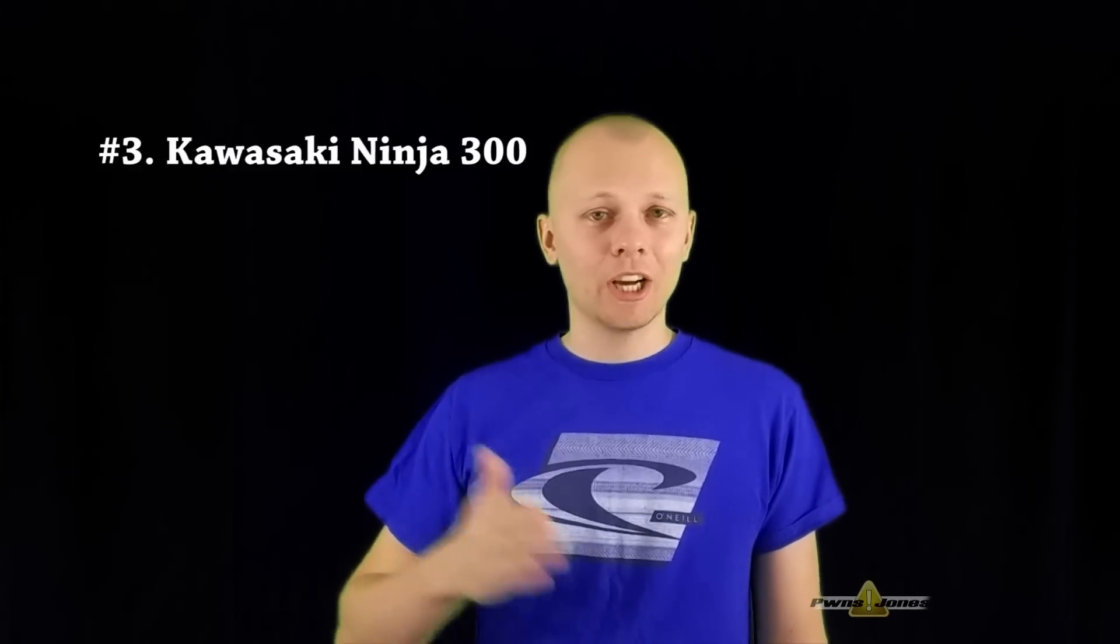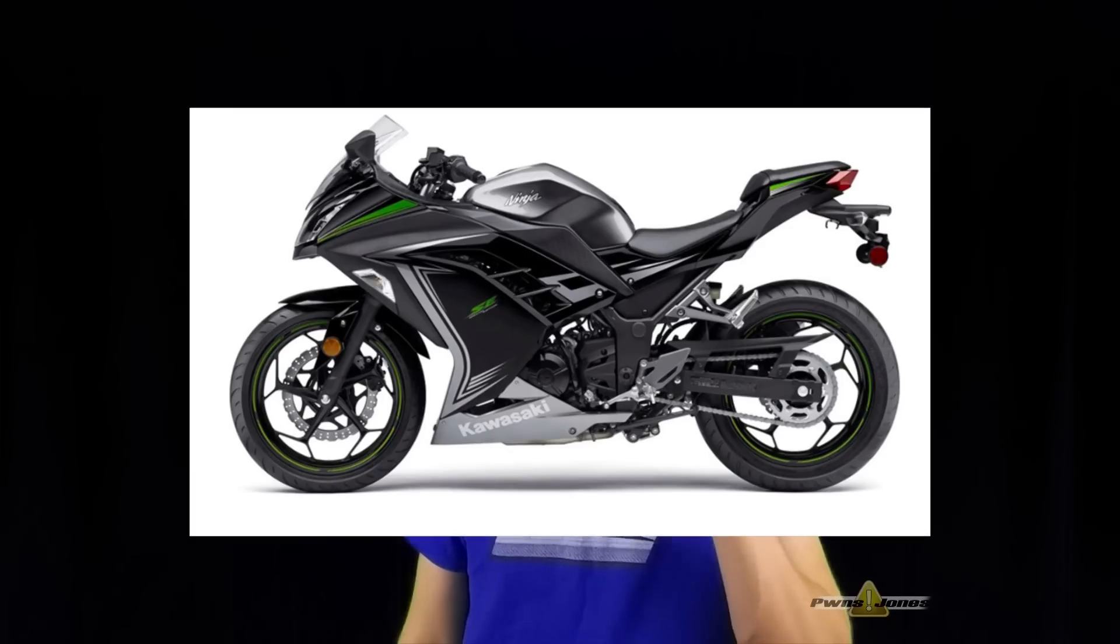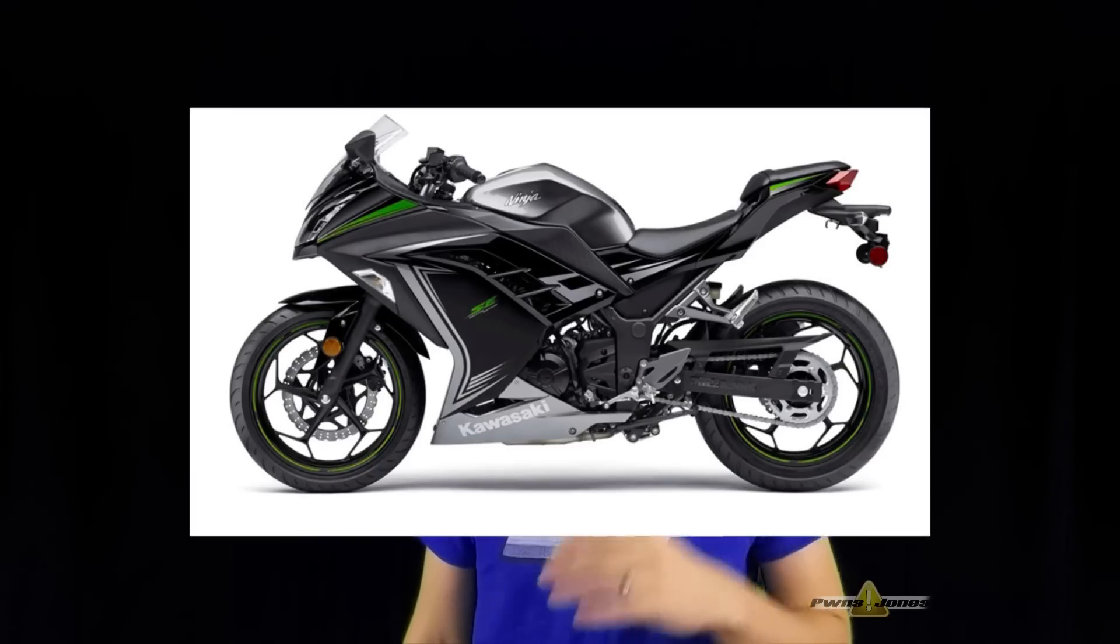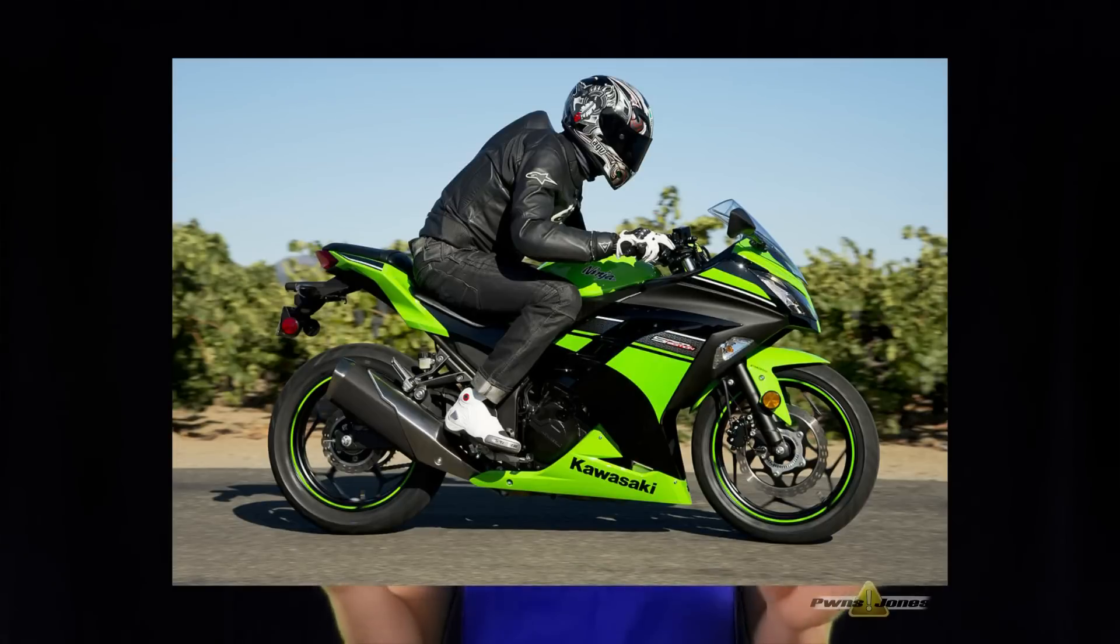Number three is the Kawasaki Ninja 300. This guy has a two-cylinder, 300 cc engine. This bike is pretty notorious for being the best beginner bike. You can get into a Ninja 300 for around $5,300, $5,200. This bike looks exactly like a 600 or a 1,000.